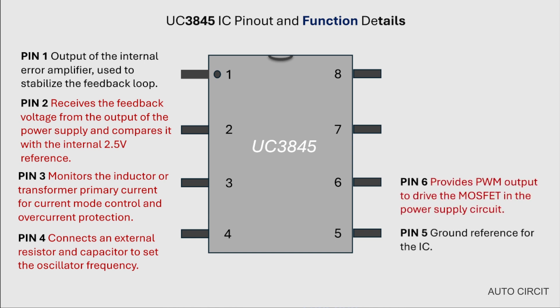Pin 5: Ground reference for the IC. Pin 6: Provides PWM output to drive the MOSFET in the power supply circuit. Pin 7: Powers the IC, typically operating between 7 volts and 30 volts. Pin 8: Provides a 5 volt reference voltage to power external circuitry.